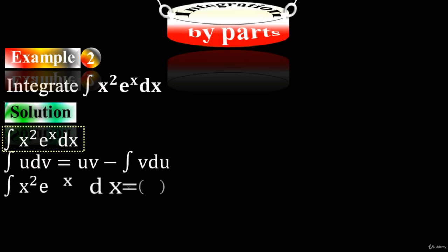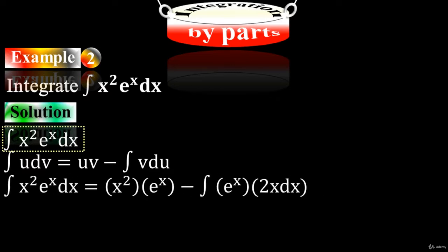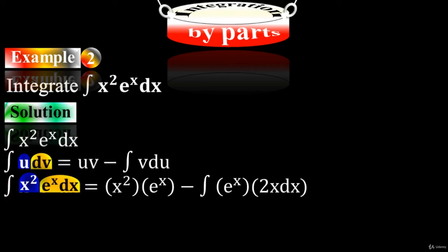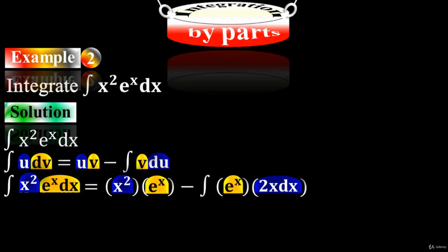To integrate the given equation using the integral formula, we have x squared times e to the x minus integral of e to the x times 2x dx. Put x squared as it is, times integral of the second term — integral of e to the x is e to the x — minus integral of the second term, which is e to the x, times the derivative of the first term. The derivative of x squared is 2x.